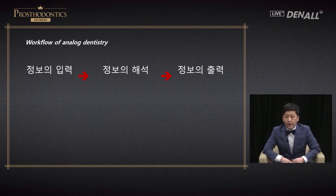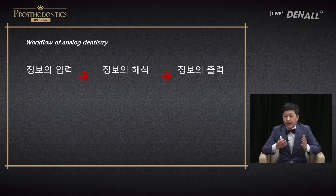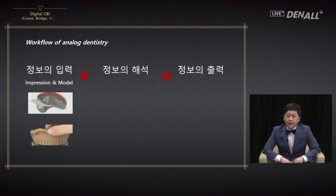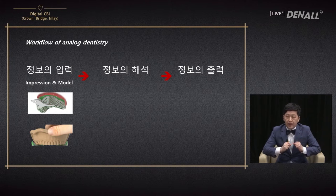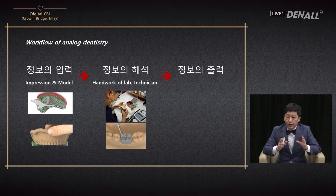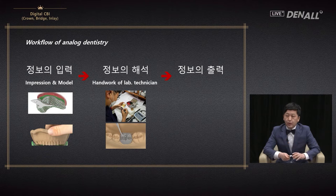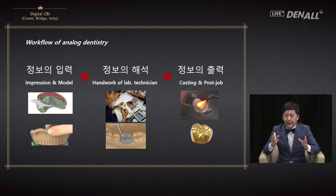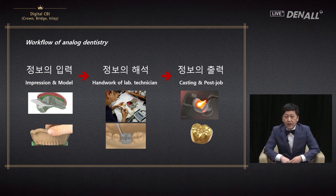Based on the interpretation, using a 3D printer or four or five axis machine, the desired outcome is printed out and the final prosthesis is fabricated. In the analog method, the same input-interpretation-print process applies: impression and model fabrication leads to input, interpretation is done via lab technicians' handwork like wax-up, and the final prosthesis — the crown — is made through physical casting or other processes.